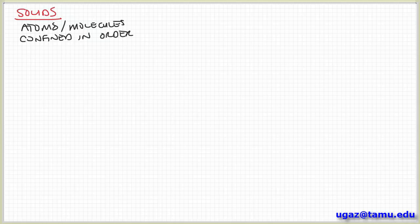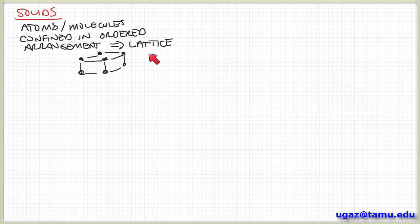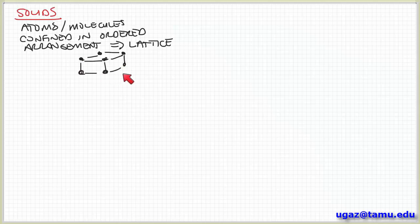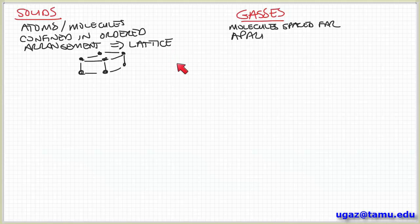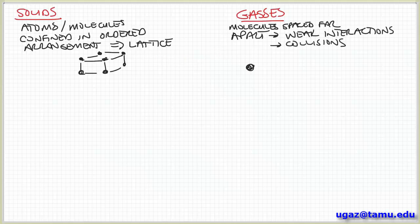Just to keep the right pictures in our heads: solids typically have strong interactions between individual atoms or molecules, and these strong interactions allow the molecules to be arranged with long-range order — a crystal lattice is one example. Gases, on the other hand, are the opposite extreme. There are very weak cohesive forces between individual molecules, so they're spaced very far apart, there's no long-range order, and gases expand to fill the shape of their container, interacting mainly by collisions.